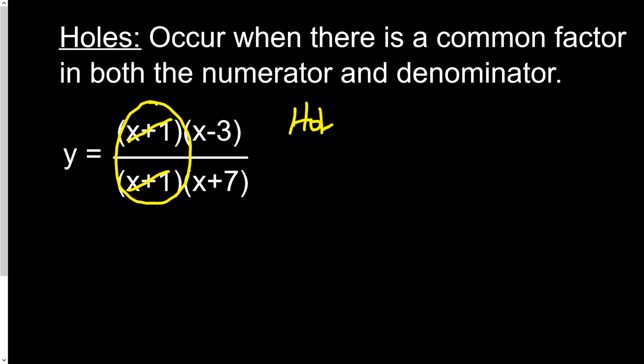The hole is when x equals negative 1. Basically, the function is going to happen everywhere around there, but you'll have an open circle because you can't divide by 0. If you put negative 1 in, you'd be dividing by 0. Even though you can cancel out the x plus 1's, with the original function you'd still be dividing by 0 if you put negative 1 in.